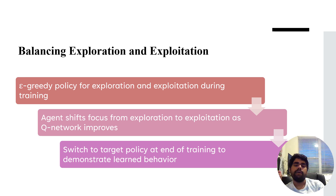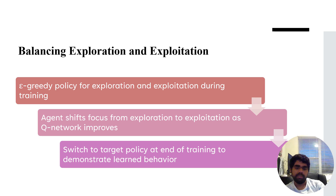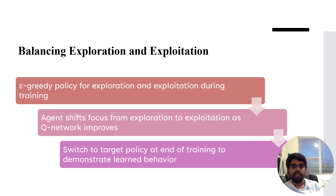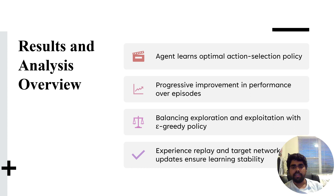To balance exploration and exploitation, we use the epsilon-greedy policy, gradually shifting focus from exploration to exploitation as the Q-network improves. We cannot fully rely on exploration once the optimal output is reached, so we switch to the target policy at the end of training to demonstrate the learned behavior.